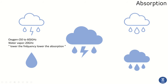When considering water vapor, the attenuation is quite high when using 20 GHz frequency. In general, the rule of thumb is: lower the frequency, lower the absorption. Regarding rain attenuation, at 6 GHz microwave frequencies the attenuation is about 0.001 dB per kilometer.